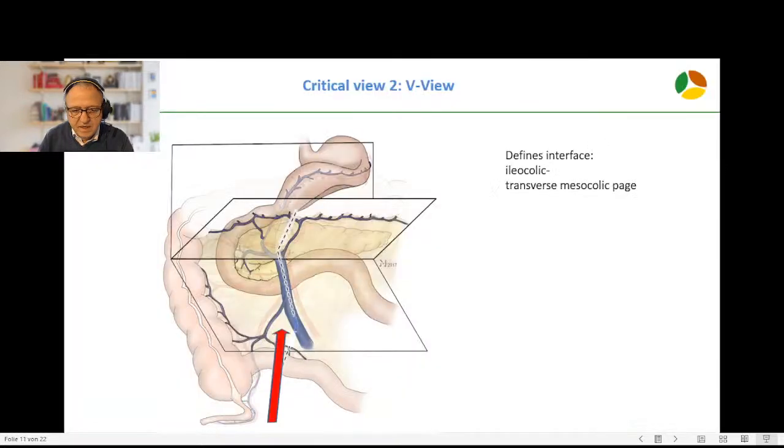Now we have to change position, head up, tilt to the left. Critical view number two is the V-shaped configuration of the iliocolic vessels with the superior mesenteric vessels. We head for the incision point located between the angle of the SMB and the iliocolic. We're not going directly next to the iliocolic vein in order not to injure the lymphatic tissue.